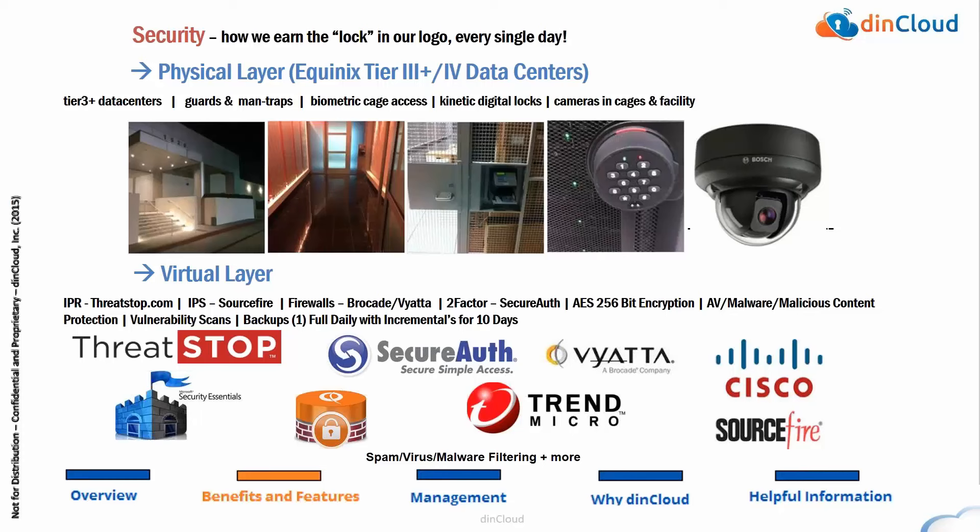As far as security, we host exclusively with Equinix out of Tier 3 plus and Tier 4 data centers — SSAE 16, SOC 2 certified, and SOC 1 certified in North America. We're in two data centers in Chicago and Los Angeles, Chi 3 and LA 3 with Equinix. These are military-grade hardened facilities, no critical infrastructure in the parking lot, everything's behind four walls. There are guards at the entrance and walking the floors, two man traps to enter the data center, a private cage with biometric access, each rack has its own kinetic locks, and IP cameras with night vision recording everything — thousands of cameras throughout the facility.